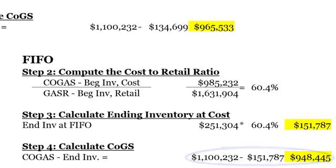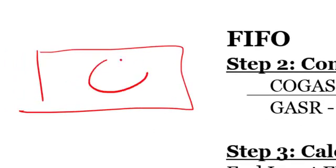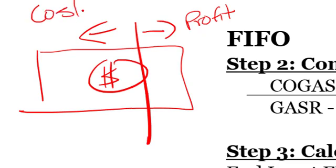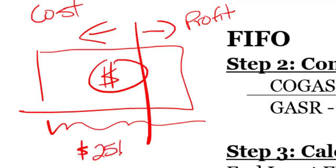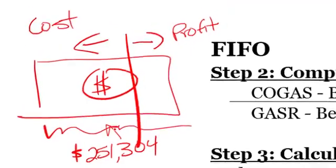Again, the whole point of this is to take the bill, what we would charge to our customers, and break the piece that's our profit from the part that's our cost. And what we did with that whole big thing in step one was to figure out that the total amount I could charge to my customers was $251,304 and I'm going to use a percentage to figure out this piece of that retail value.